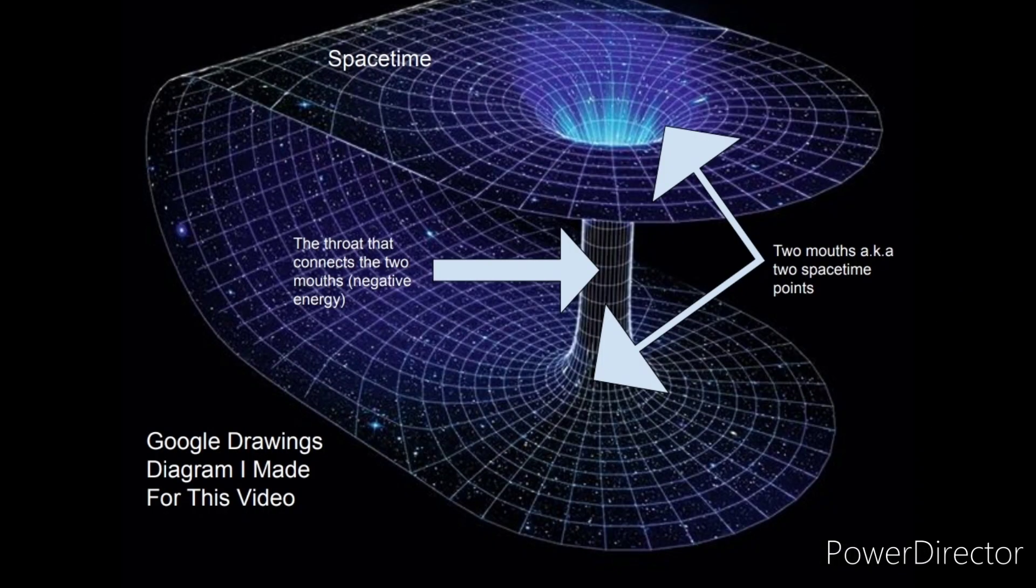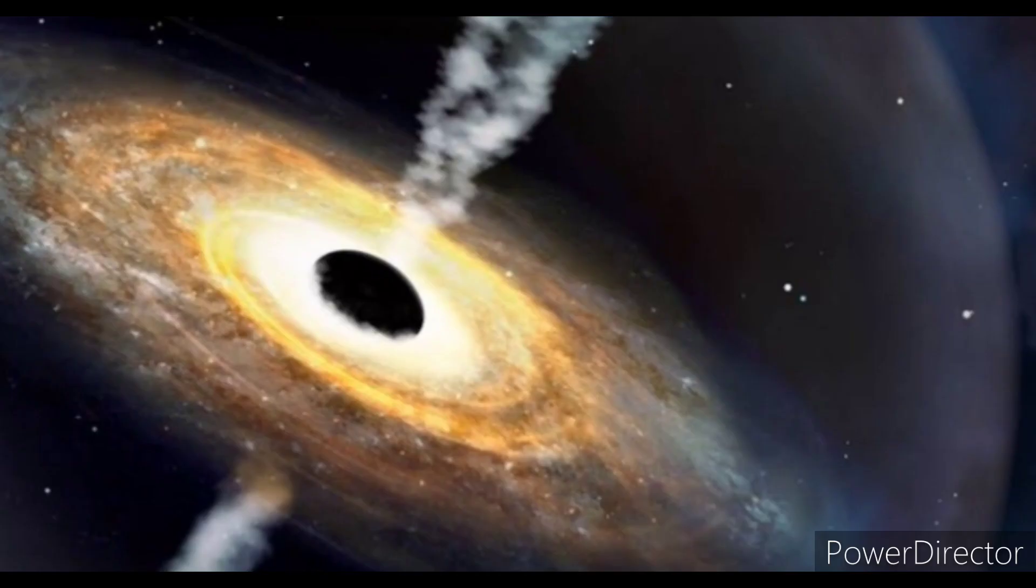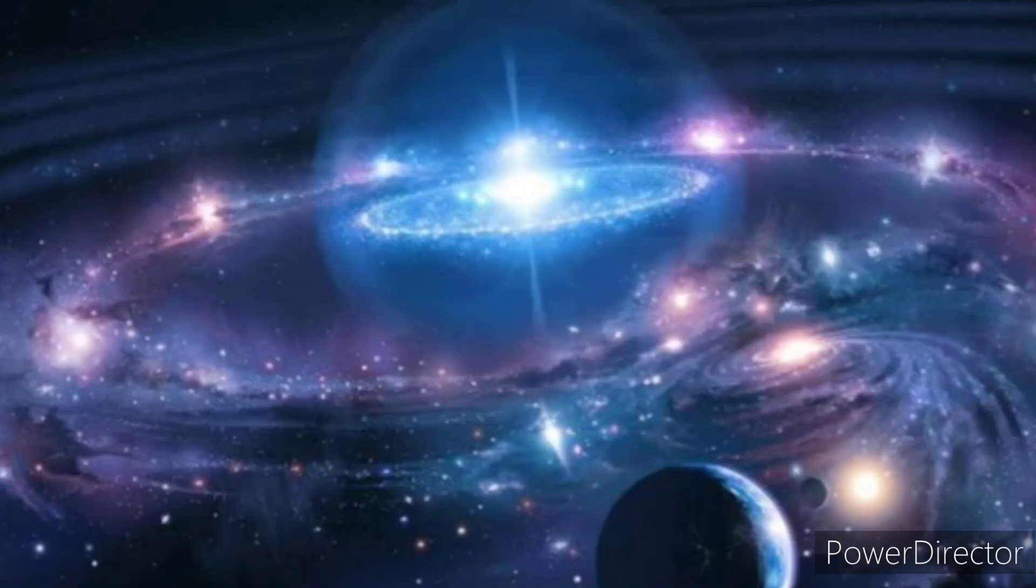In conclusion, to summarize all of the information, wormholes, aka Einstein-Rosen bridges, are hypothetical structures that connect two space-time points only with exotic matter, and damn, they're a hard topic to cover. Anyways, I still hope you guys found this video interesting, and once again, thought about how outer space, and generally science, can be more epic than science fiction.